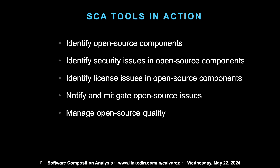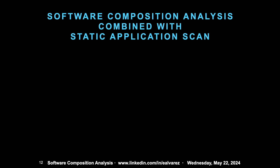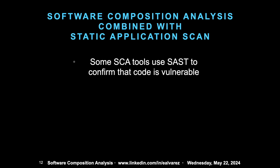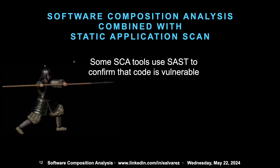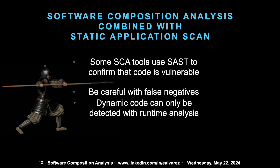Notify and migrate open source issues. Manage open source quality. There are tools out there that combine static application analysis with software composition analysis, basically saying whether there is or isn't a vulnerability. Just a warning to be careful of false negatives — dynamic code detection is the only way. Static analysis is not going to be able to find all issues. If static analysis finds a vulnerability, it's likely you actually have one. But if it doesn't find one, it doesn't necessarily mean you don't have one, because only with dynamic code analysis, not static analysis, are you able to determine that.